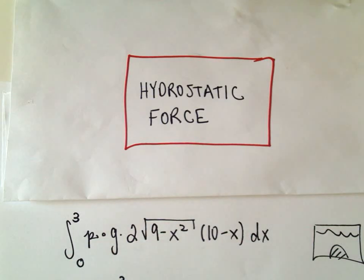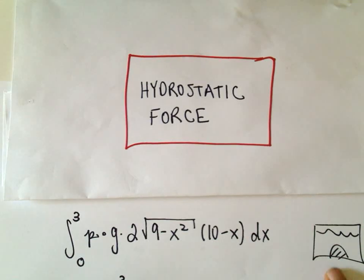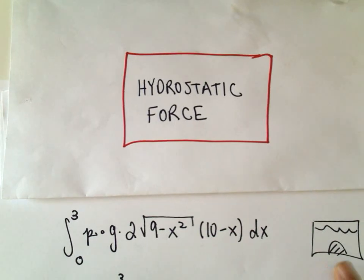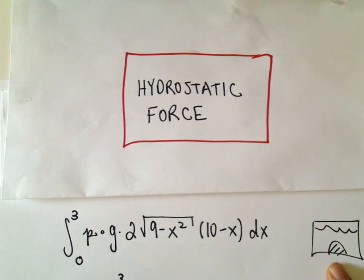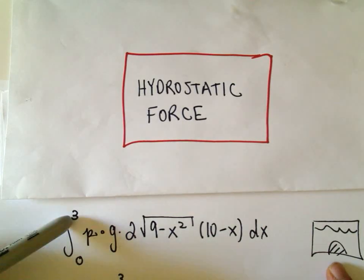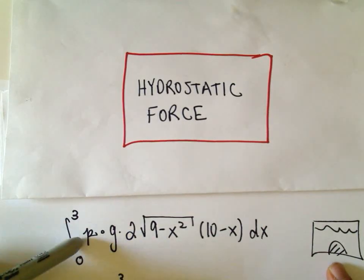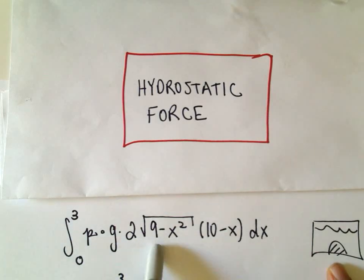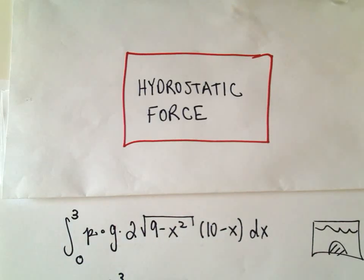In this video, I want to finish off my second example of finding hydrostatic force. In the first part, we set up the integral to find the hydrostatic force against a semicircular gate, and we got the integral from 0 to 3 of density times gravity times 2 times the square root of 9 minus x squared times (10 minus x) dx.